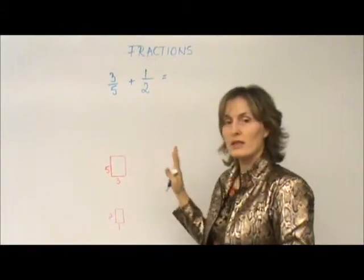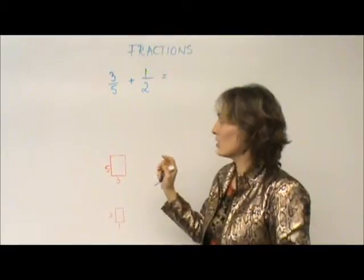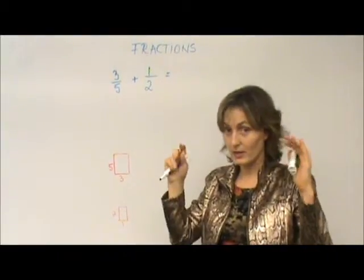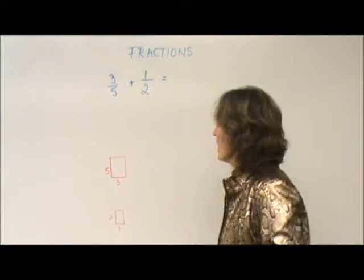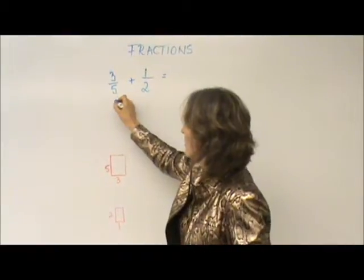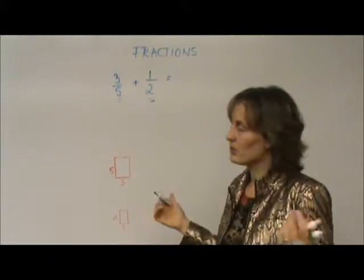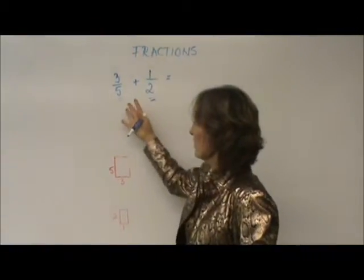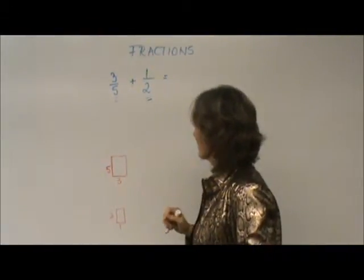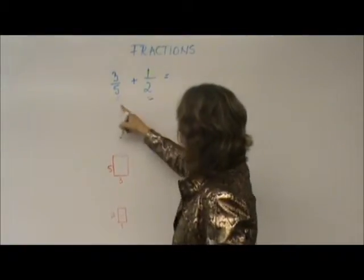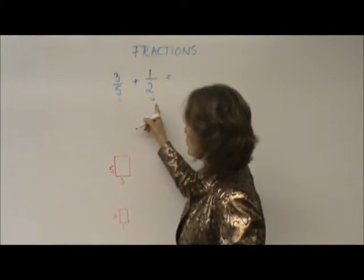So remember, when you add and subtract fractions you need to have the same currency, the same common denominator. The same common denominator between 5 and 2 is 10. 5 times 2 is 10. You have to look for a number that can be divided by both of them evenly. Now, both of them are going to change.